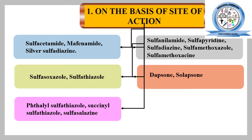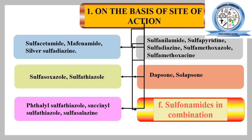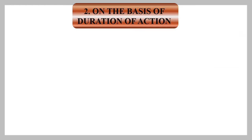Phthalylsulfathiazole, succinylsulfathiazole, and sulfasalazine are prodrugs that must be activated inside the body. There are also sulfonamides used in combination with other drugs — for example, sulfamethoxazole is used in combination with trimethoprim.